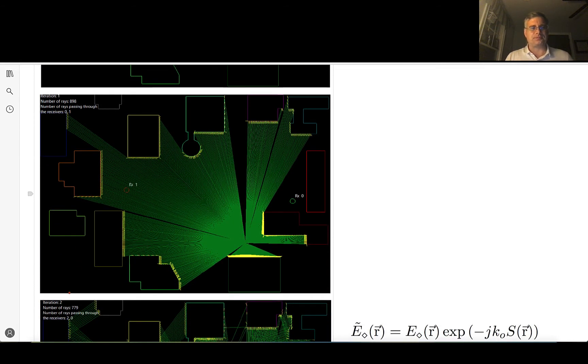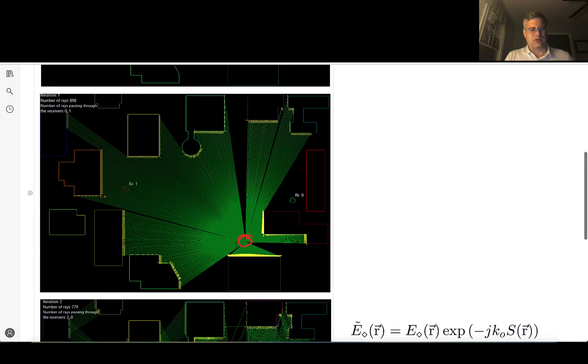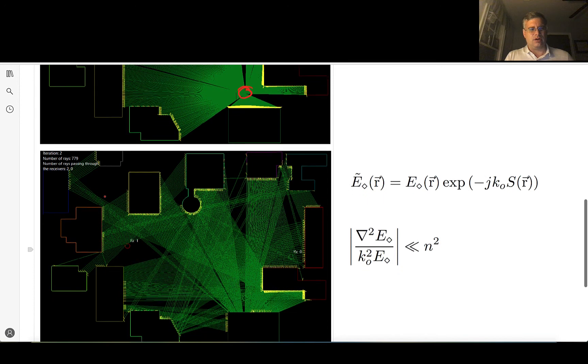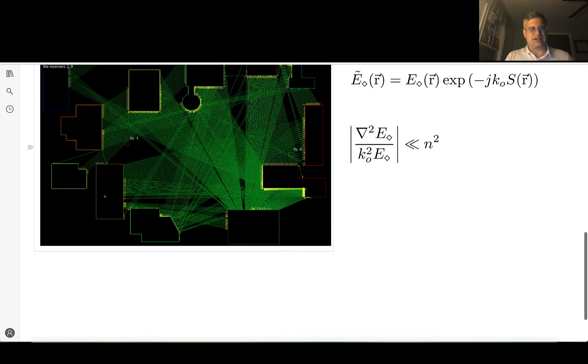So the student used a ray tracing code, and here you see an initial launch. This is a ray launching scheme where rays are being launched from the transmitter in all directions, sending out, striking the building where it will experience angle of incidence equal to angle of reflection. Second legs, which are illustrated in the next slide.